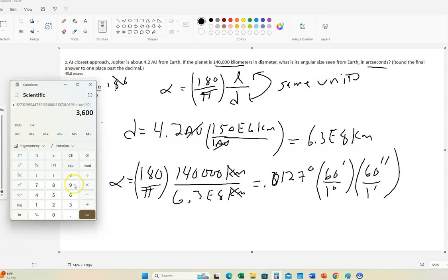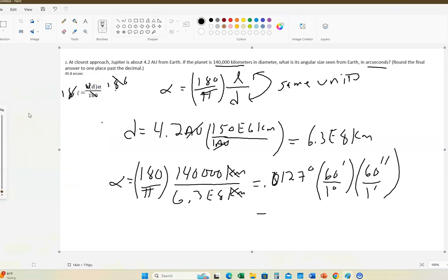We were to round it to one place past the decimal, so it would be 45.8. It's 0.83, the three is less than five, so I don't round up. So this is 45.8 arc seconds.